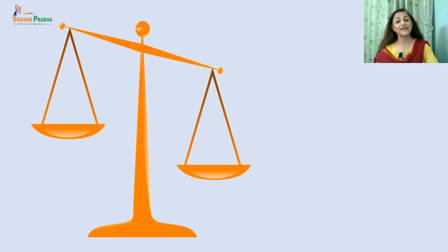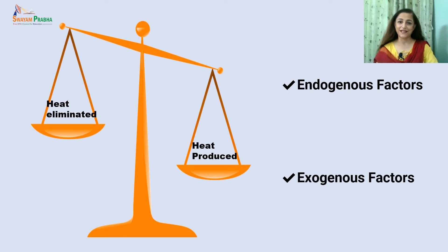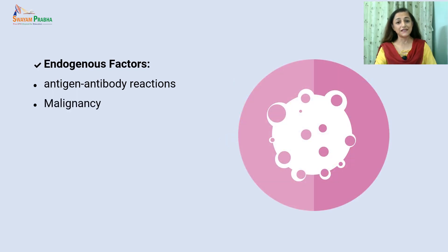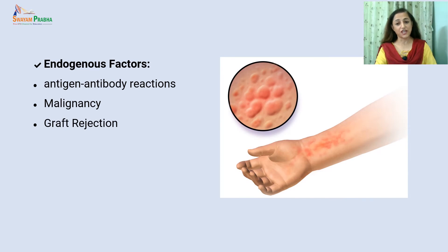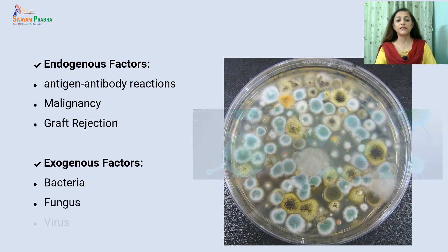Fever is an imbalance between the heat eliminated and the heat produced by the body. It can be caused by two factors: first, endogenous factors which are internal factors, and second, exogenous factors which are external factors. Endogenous factors could be antigen-antibody reactions, malignancy, or graft rejection. Whereas exogenous factors could be bacteria, fungus, or virus.